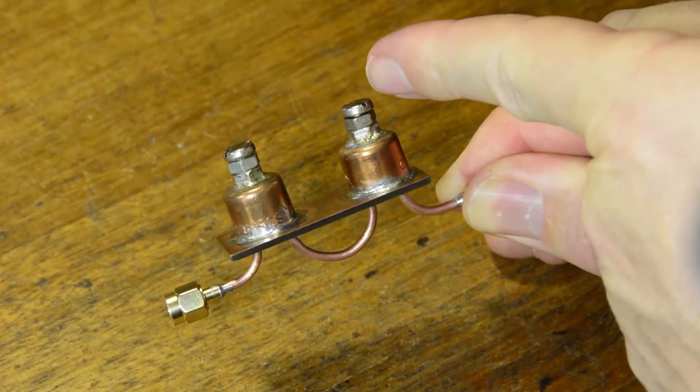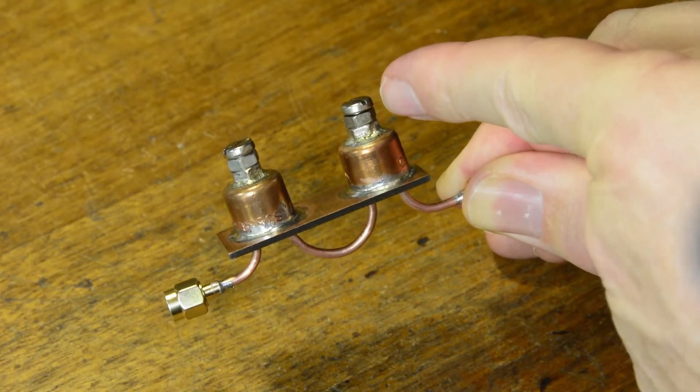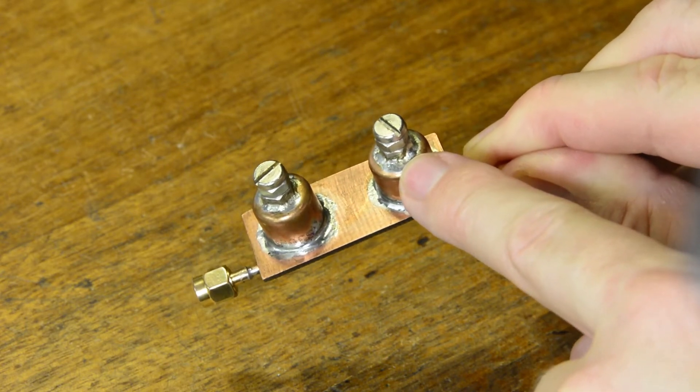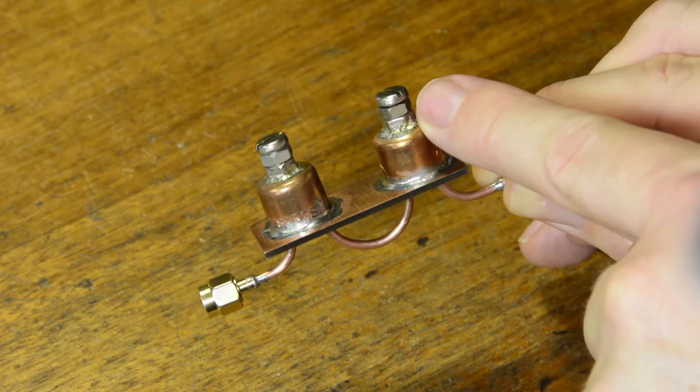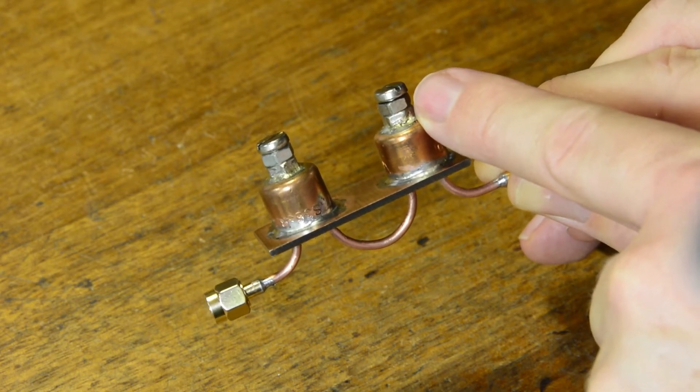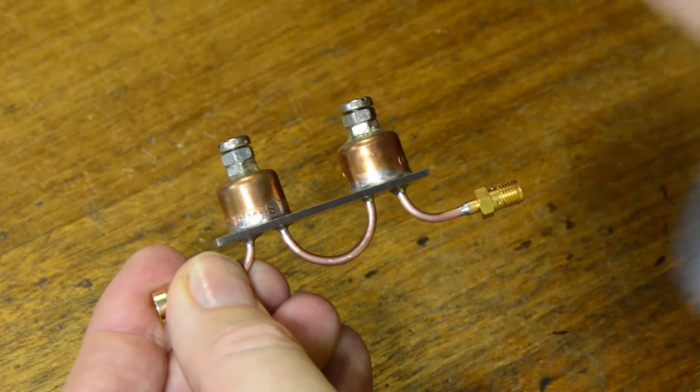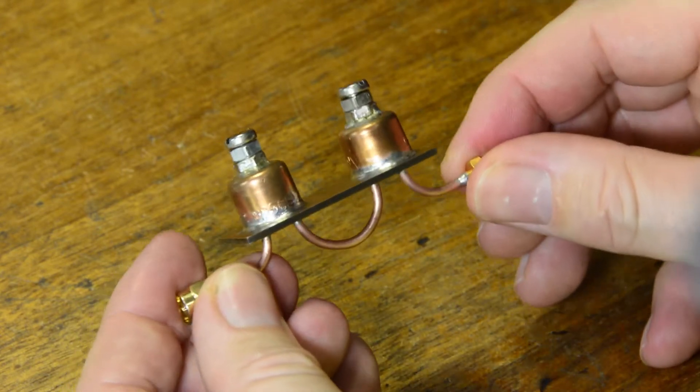There are some M4 nuts and screws. The bottom nut there you can see is soldered to the top of the end cap and the second nut becomes the locking nut. So once you've adjusted it just to prevent the tuning from moving.